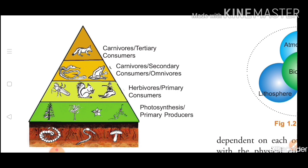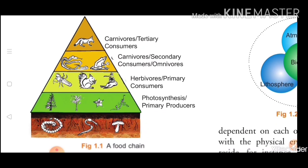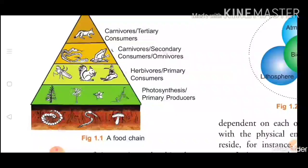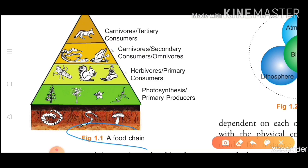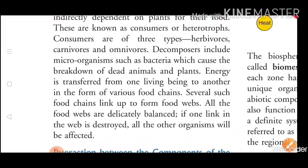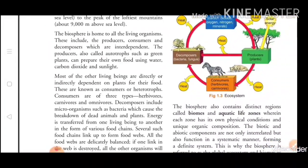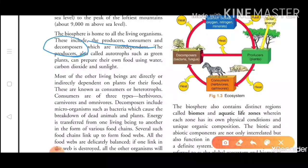All these things — producers, consumers, and decomposers — are interdependent on each other. This interdependence is called a food chain. We have covered producers and consumers, but there is another word that remains, and that is decomposers.